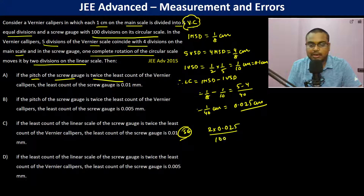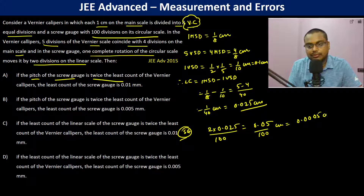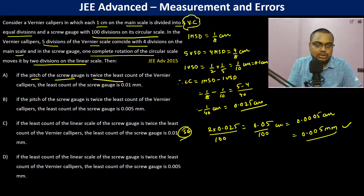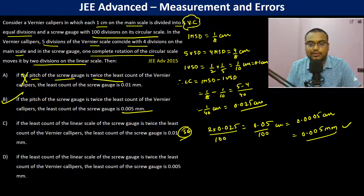The least count of the screw gauge is pitch divided by 100: 0.05 divided by 100 = 0.0005 centimeter = 0.005 millimeter. So one option is not correct, but the option showing 0.005 millimeter is correct.